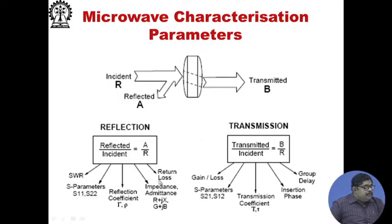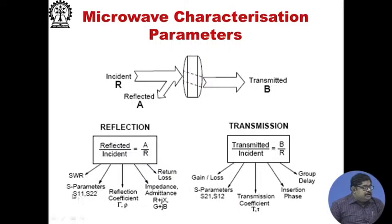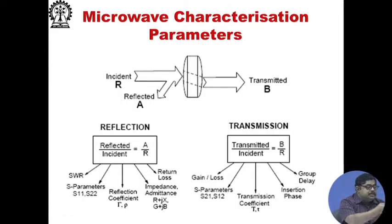For reflection phenomena, there is an incident wave, some reflected wave, and some transmitted power. Reflection is characterized by reflected divided by incident, giving SWR, reflection coefficient, S11, S22, voltage and power reflection coefficients, return loss, impedance, and admittance. Transmission is characterized by B divided by R, giving gain or loss, S parameters, transmission coefficient T, insertion phase, and group delay. These are the various parameters used to characterize reflection or transmission of waves at microwave frequencies.